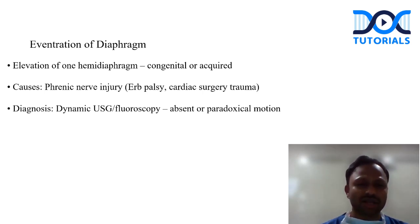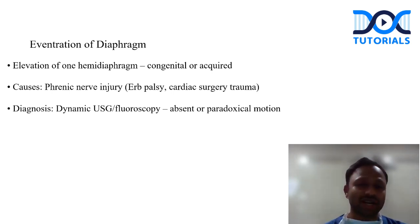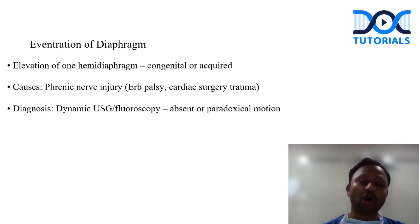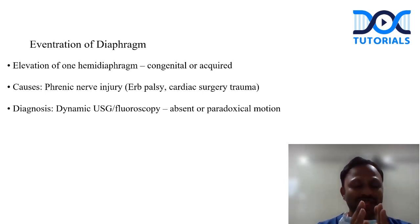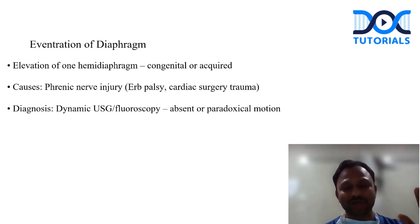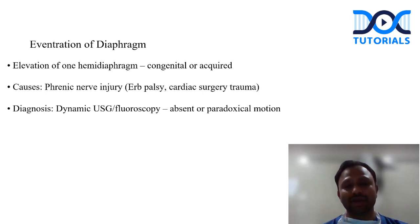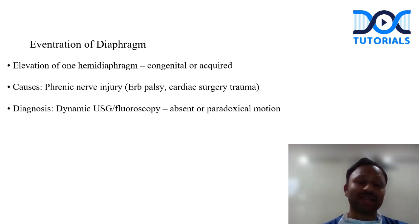Common causes of eventration include iatrogenic phrenic nerve injury from cardiac surgery, nerve palsy, or obstetric trauma such as Erb's palsy. Diagnosis is by dynamic ultrasound and fluoroscopy, where absent or paradoxical motion of the diaphragm is seen. On X-ray, you will see abnormal elevation of one hemidiaphragm. Causes include congenital, post-traumatic, phrenic nerve injuries, and post-obstetric trauma.